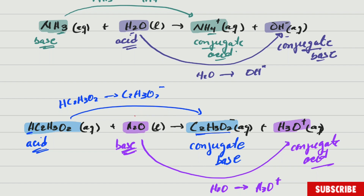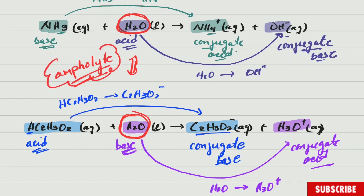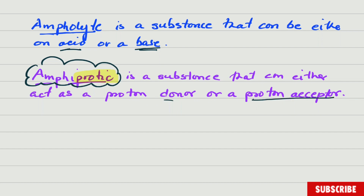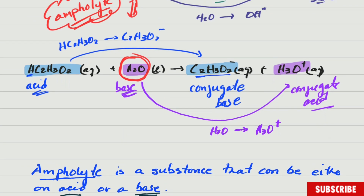The main purpose of this video is to see that water here is a base, and in the first reaction water was an acid. So we can see that some substances can sometimes be acids and sometimes bases. This substance is what we refer to as an ampholyte. An ampholyte is a substance that can either be an acid or a base. The term amphiprotic — any time you see the word 'protic' involved — refers to protons being either donated or accepted. An amphiprotic substance can either donate or accept protons.